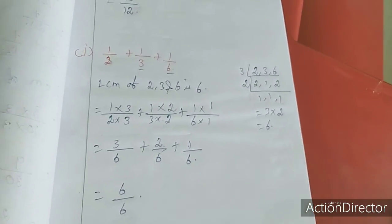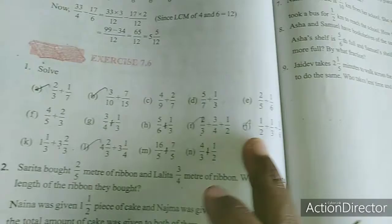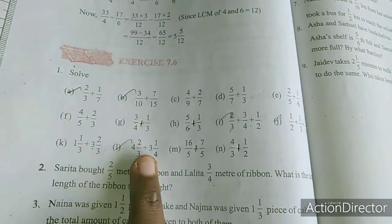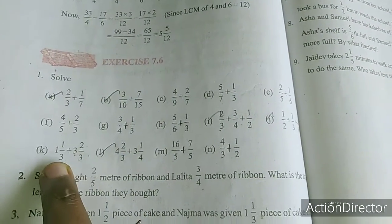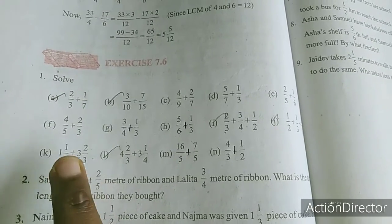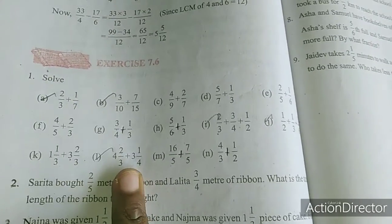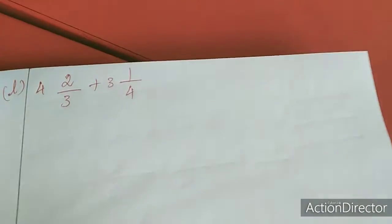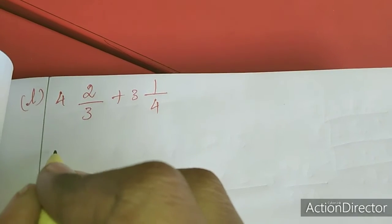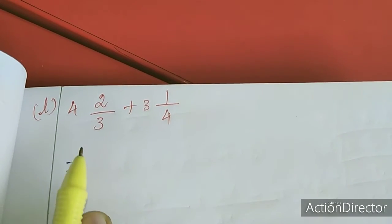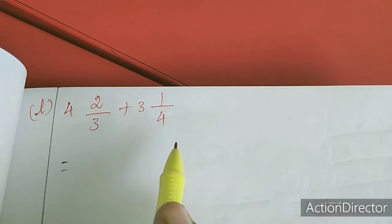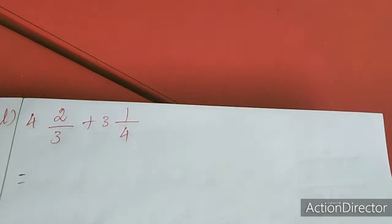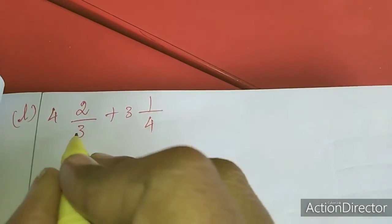Now we will move to the next sum. See here — J, K, and L is own model. In this K sum's denominator is equal. So I am going to do the L sum. They gave it in mixed fraction form — first we have to convert this mixed fraction as improper.